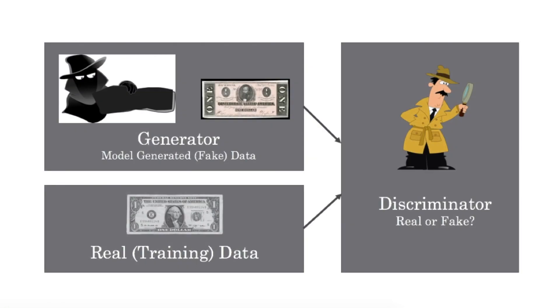Now let's talk about the adversarial term. The typical example is that of a detective and a counterfeiter. In this case, we have two adversaries. The first is the counterfeiter, which is the generator, and its job is to create fake $1 bills. Next, we have the detective, called the discriminator, and the job of the discriminator is to tell you if a dollar bill is real or counterfeit. We then set up a game and keep track of who's doing a good and a bad job. If the discriminator can easily distinguish between real and fake $1 bills, then we update our generator to do a better job. If the discriminator is failing and can't tell the difference, then we update the discriminator to do a better job.